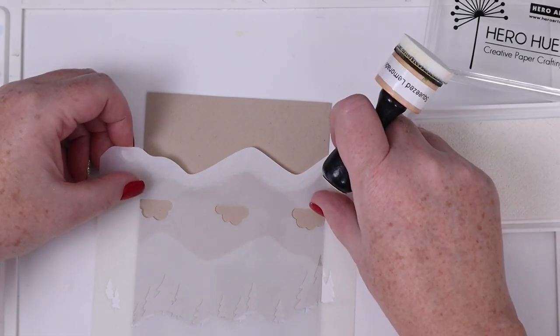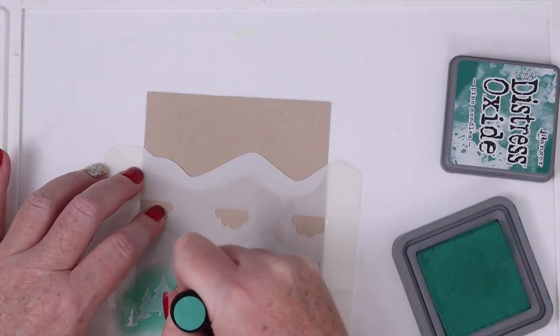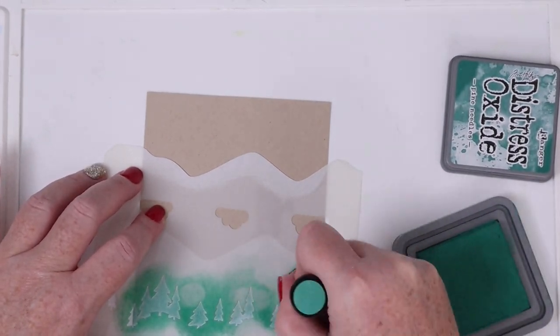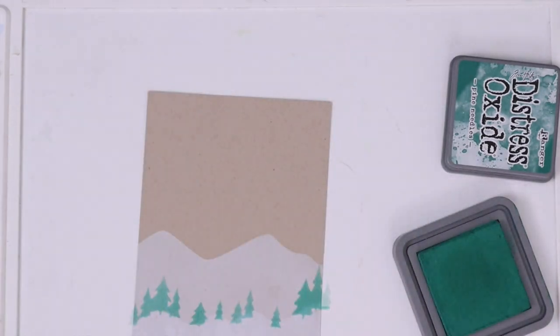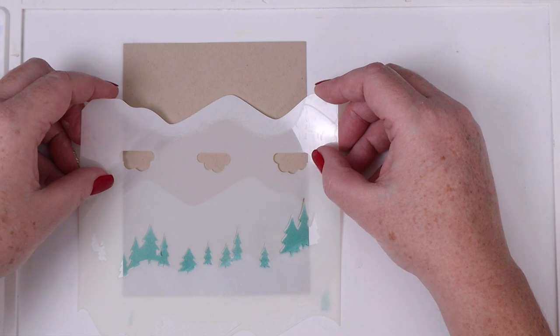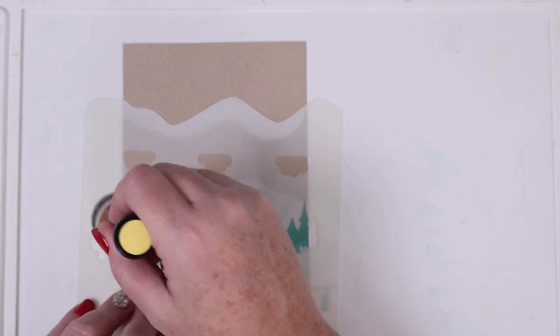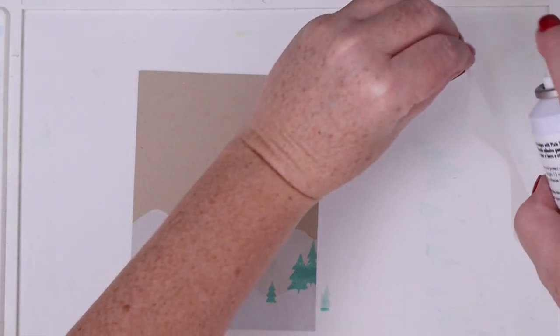I'm pouncing the Pine Needles Distress Oxide ink on top of the open areas of the pine trees rather than blending because I wanted them to look snowy. They still ended up looking a little too green for my taste, so I cleaned off the stencil and replaced it over the trees and added a few dabs of the white ink to add some extra snow on top.